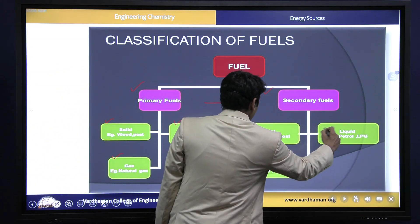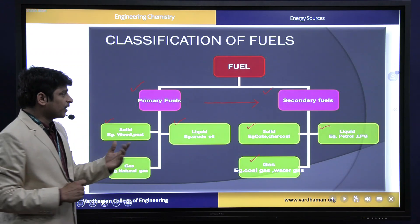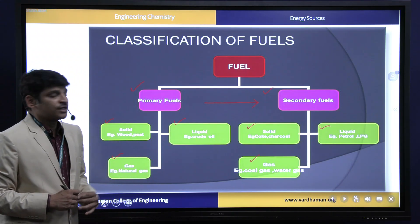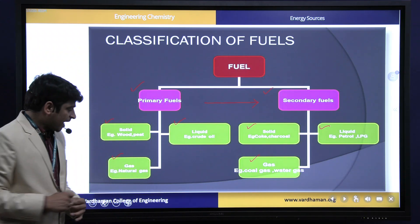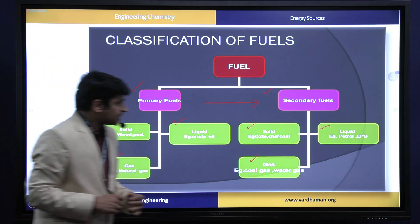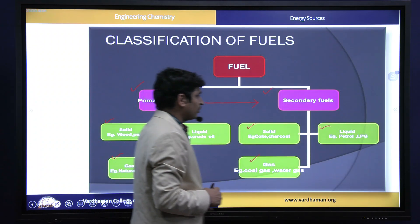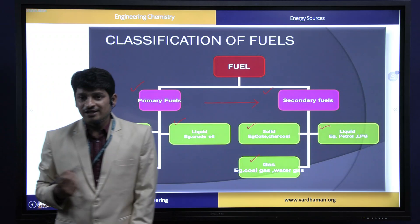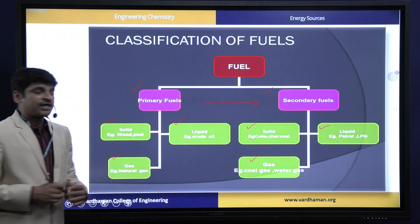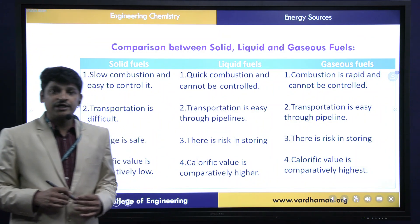Examples of solid primary fuels: wood, peat, lignite, etc. Examples of liquid primary fuels: crude oil or petroleum. Examples of gaseous primary fuels: natural gas. Examples of solid secondary fuels: coke, charcoal, etc. Examples of liquid secondary fuels: petrol, diesel, LPG, etc. Examples of gaseous secondary fuels: coal gas or water gas.